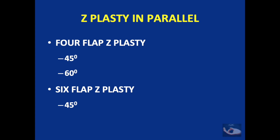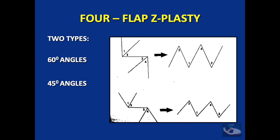The second type of multiple Z-plasty is the Z-plasty in parallel, represented by the four-flap Z-plasty or the six-flap Z-plasty. The important thing to remember about multiple Z-plasties in parallel is that the amount of tissue recruited from the sides is enormous. So unless a lot of laxity is present in the surrounding tissues, Z-plasties in parallel are not done.